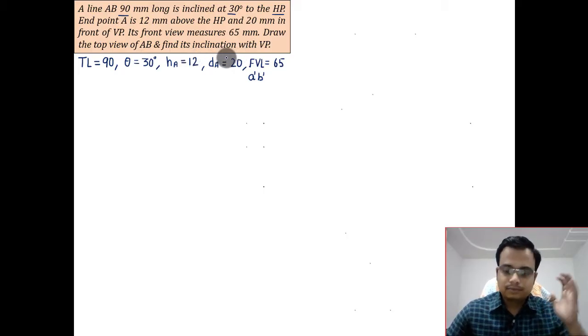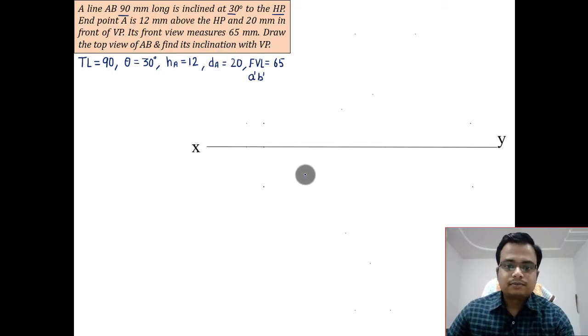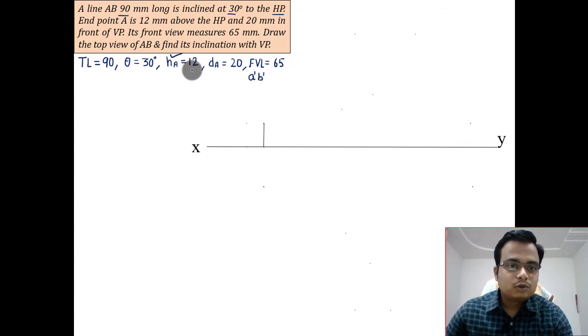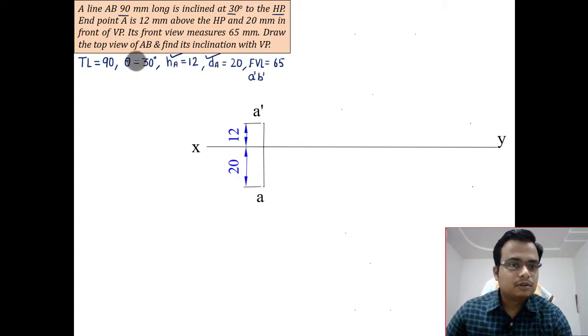So let's go ahead and let's make a reference line. What else do we have? We've got ha 12, so that is 12 above, done. And we've got da 20, so h was above, d was going to be below, that's d.